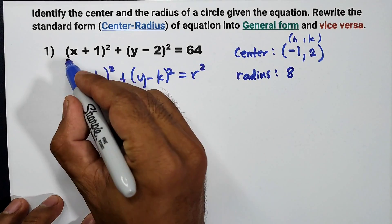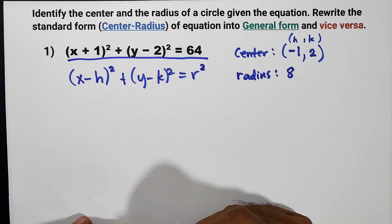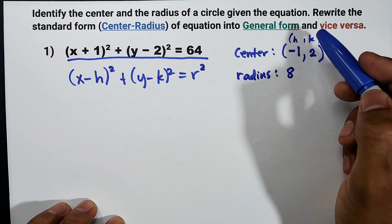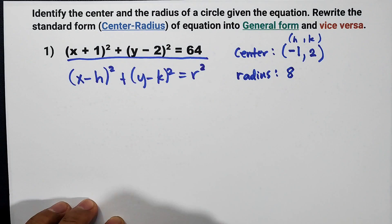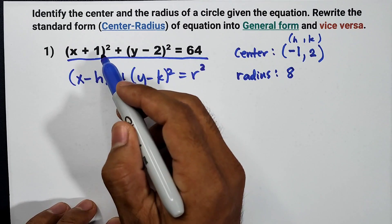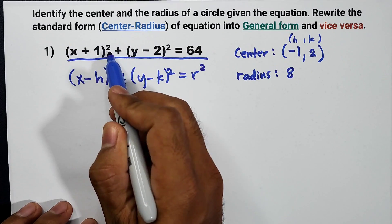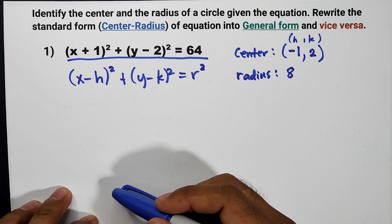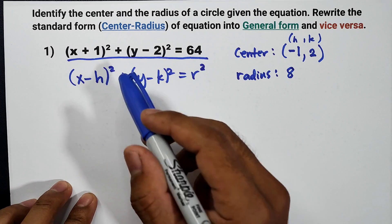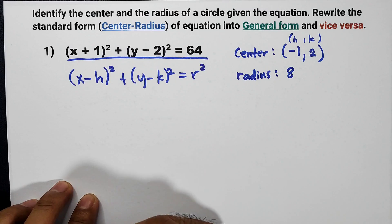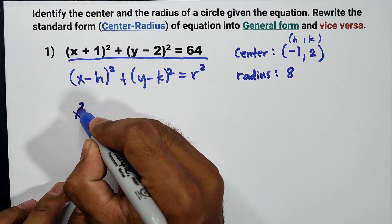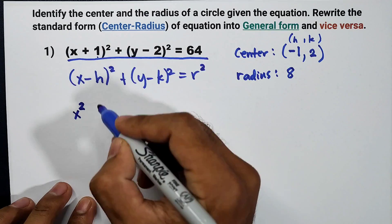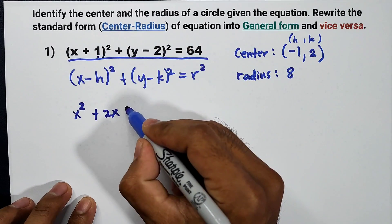Now let us rewrite this equation from center-radius form into general form of the equation of the circle. We are going to expand the square of binomials. For x plus 1 squared, that is x plus 1 times x plus 1. Using the squaring of a binomial: square the first term — that is x squared — then twice the product of x and 1, that is 2x, then square of 1, that is positive 1.